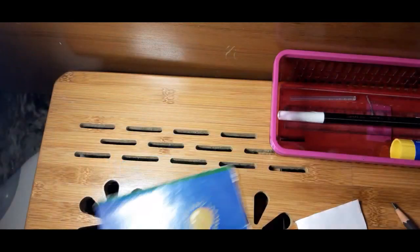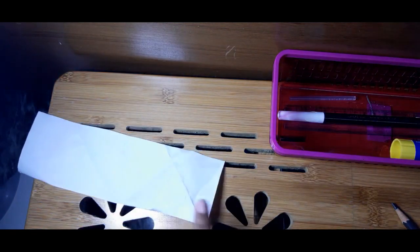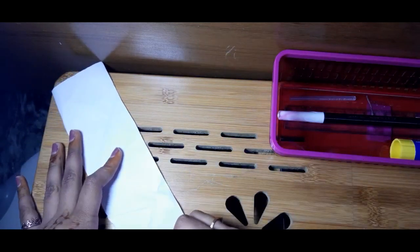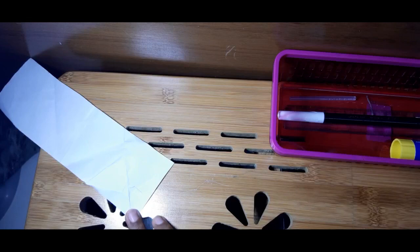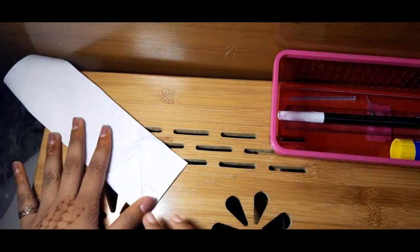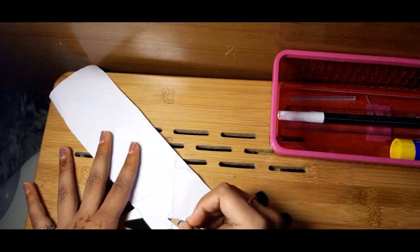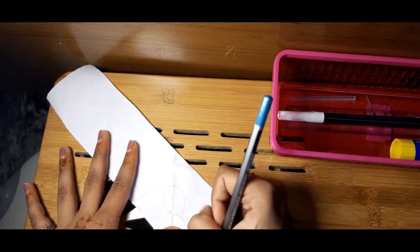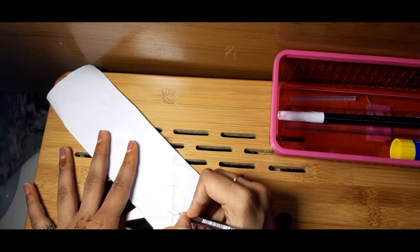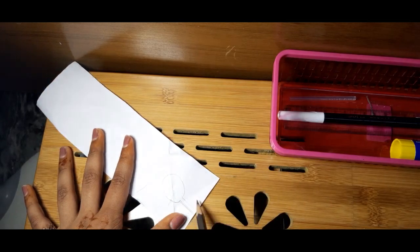So let's get started. Firstly we have to draw the shape of badminton on the paper. Now you can see I have drawn the shape of badminton, so I will cut this.